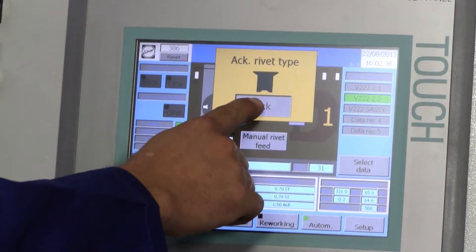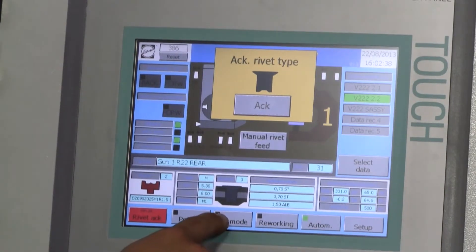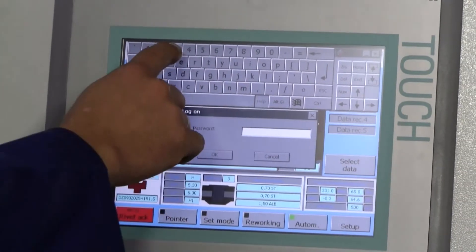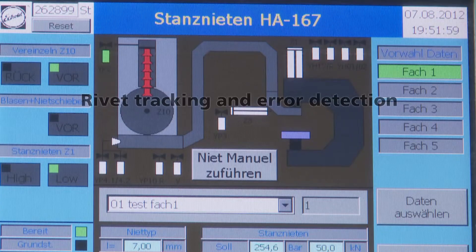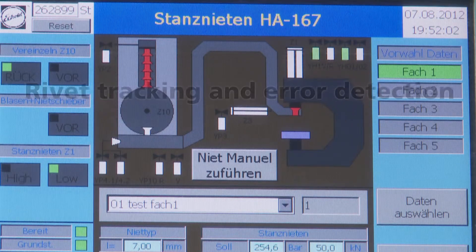The intuitive control system of the self-piercing riveting unit is password protected and can be configured to cater for different user groups. Rivets can be tracked and errors analyzed on the touch screen.